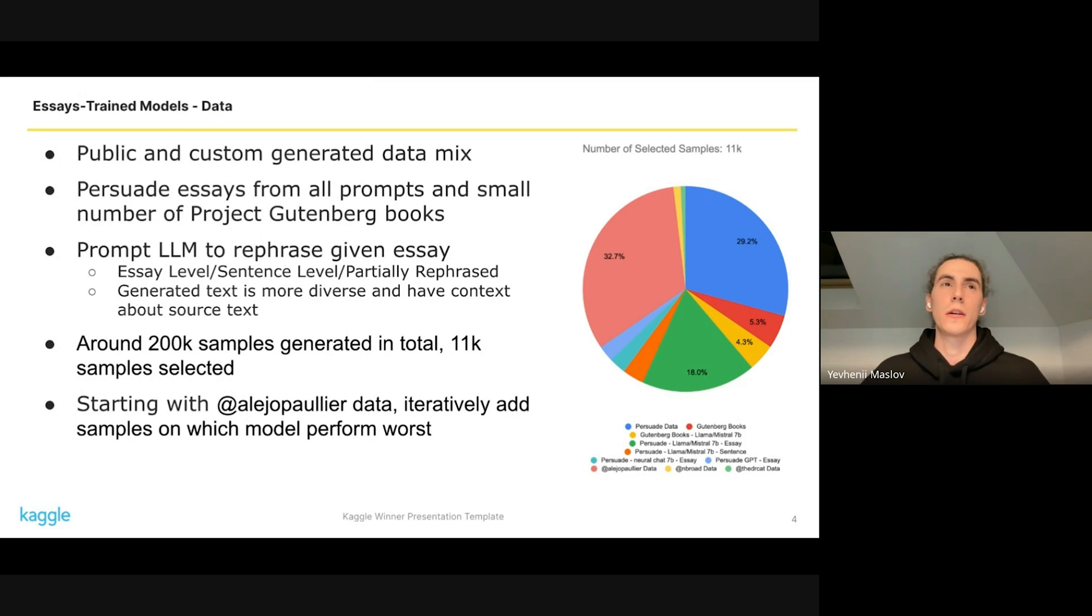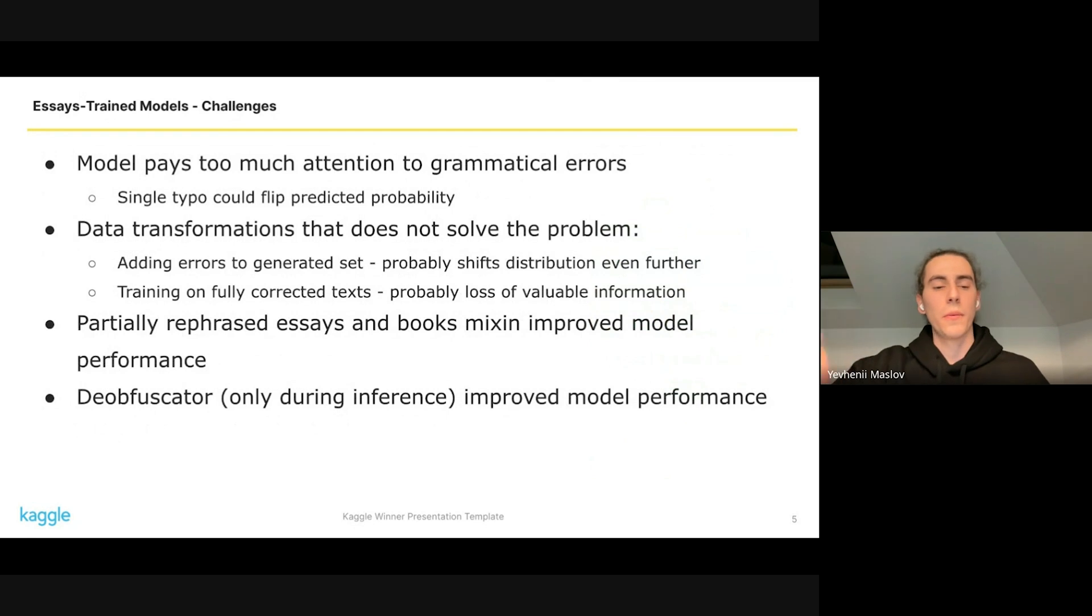We iteratively added human-written text and generated text that previous models failed to predict correctly. The main problem with these models was paying too much attention to grammatical errors, up to a point when a single typo could flip predicted probability. We tried adding errors to generated texts and training on fully corrected texts, but it didn't help.